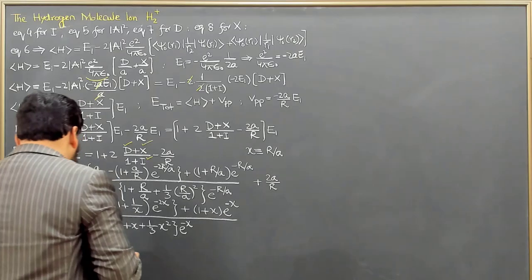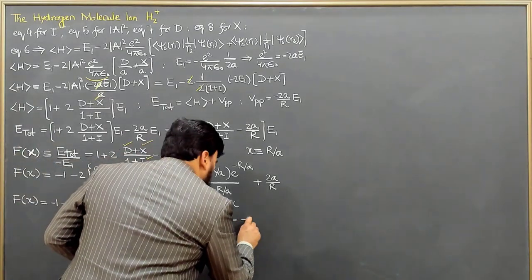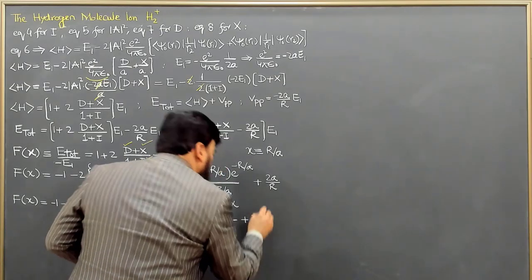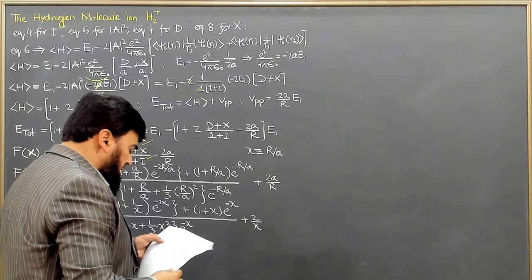And plus this term will come out to be 2 over x, because a over r, so 1 over x, so 2 over x.